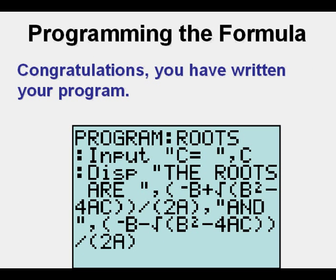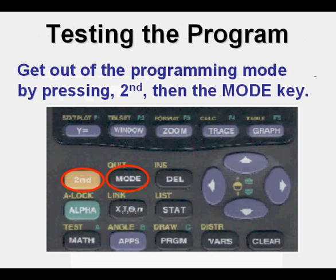Congratulations — you have written your program to calculate roots or solutions of quadratic equations. You can get out of programming mode by pressing the Second key, then the Mode key next to it, which is Quit.